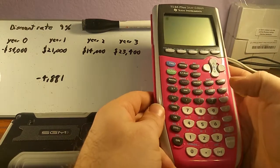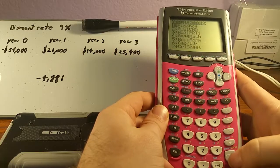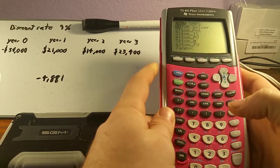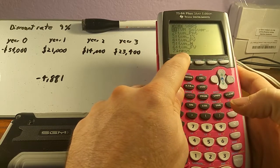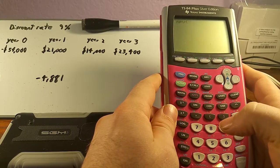We've got our calculator, and we're going to go into our apps menu. We're going to use the finance calculator here. As you can see down here at the bottom, number 7 is NPV. That's what we're going to be using. We can just hit 7 and go straight into it.